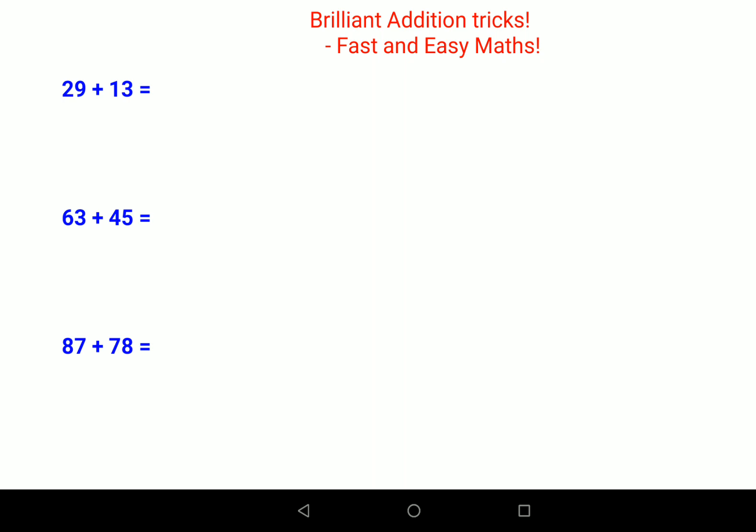Normally in day-to-day life, when people ask us what is this plus this, we take a moment and sometimes fumble. With this trick you will not fumble at all. See, 29 can be written as 20 plus 9, similarly 13 can be written as 10 plus 3. Now just add the tens: 20 plus 10 gets you 30.